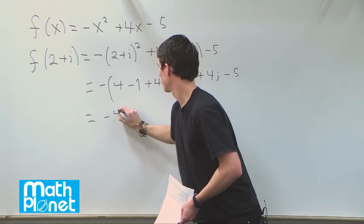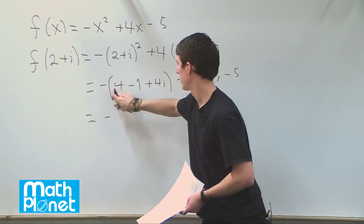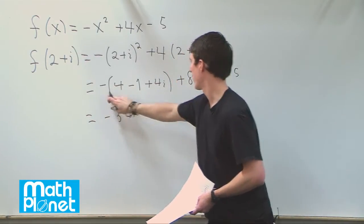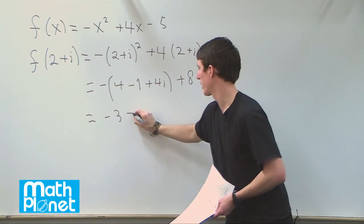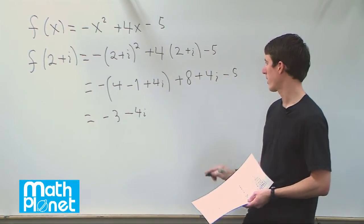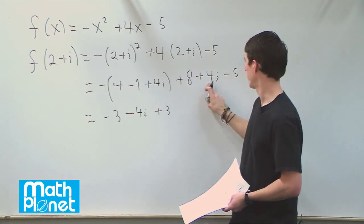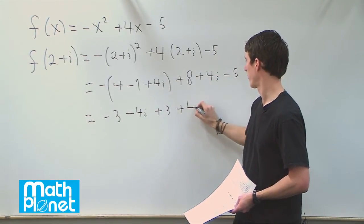Let's add these together now. We have 4 minus 1 is 3, so we'll just say negative 3, and then negative 4i. So, minus 4i, plus 8 minus 5, so that's actually plus 3. And then this is the same, plus 4i.